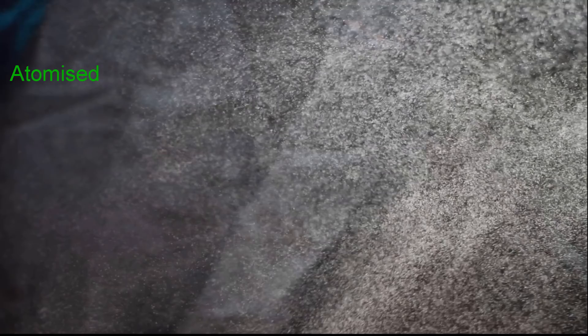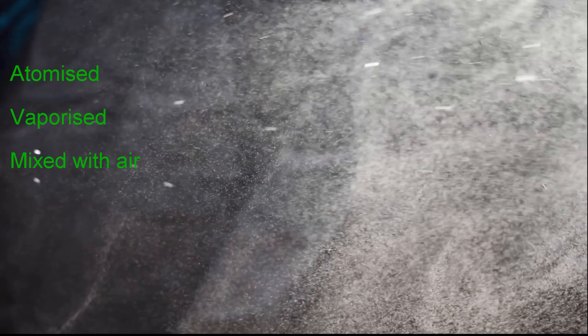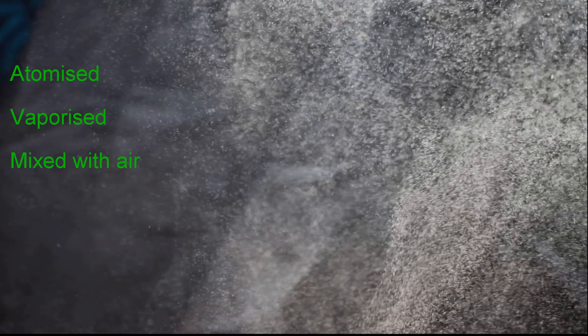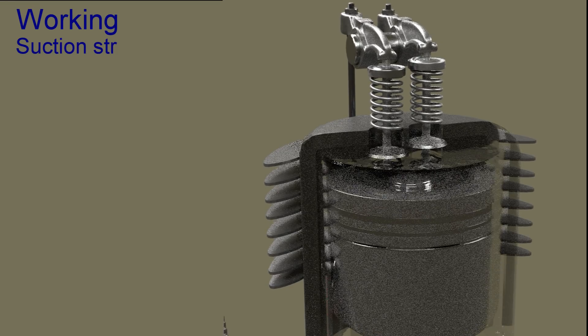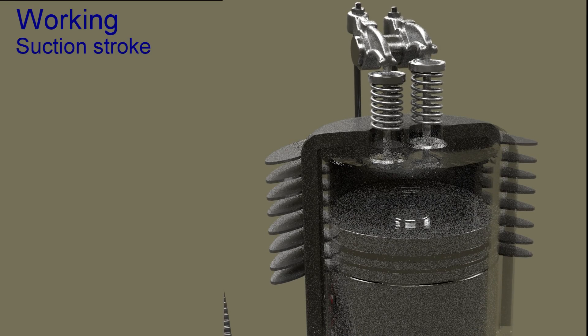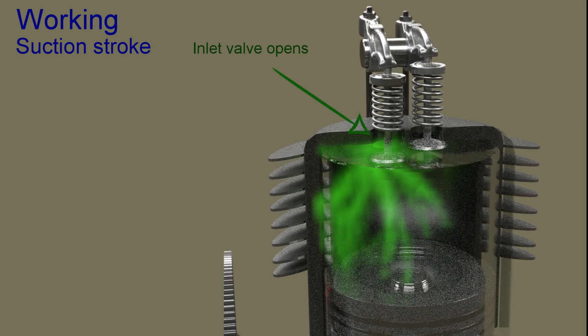In spark ignition engine, liquid fuel is atomized, vaporized and mixed with air in correct proportion before being taken to engine cylinder through the intake manifold. When the engine starts, the piston descends to cylinder's bottom from the top. Thus the pressure inside the cylinder reduces. Simultaneously, the intake valves open and the air-fuel mixture enters the cylinder.